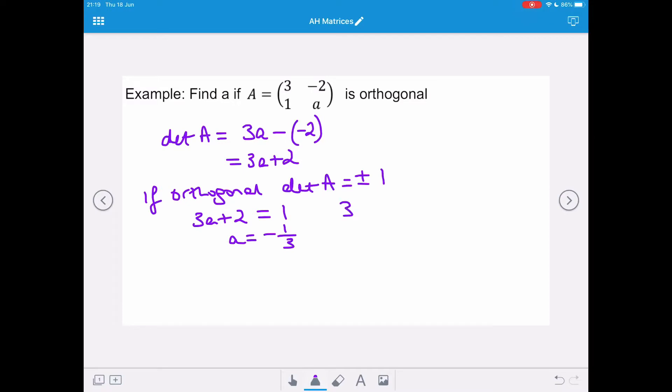And our second equation is going to be 3a plus 2 equals negative 1. And if we take away 2 and divide by 3 for this equation, we're going to get a value of a equals negative 1.